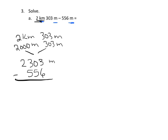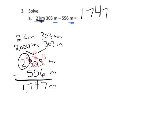We have 2,303 meters and we're going to subtract 556 meters using classic subtraction. The 300 becomes 200, the 0 tens becomes 10 tens, but then we borrow, making it 9 tens, and the 3 becomes 13. So 13 minus 6 is 7, 9 minus 5 is 4, and 22 minus 5 is 17. We get 1,747 meters.